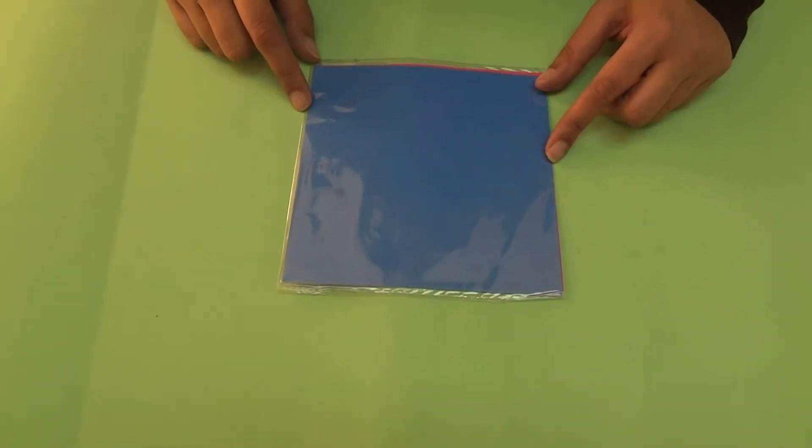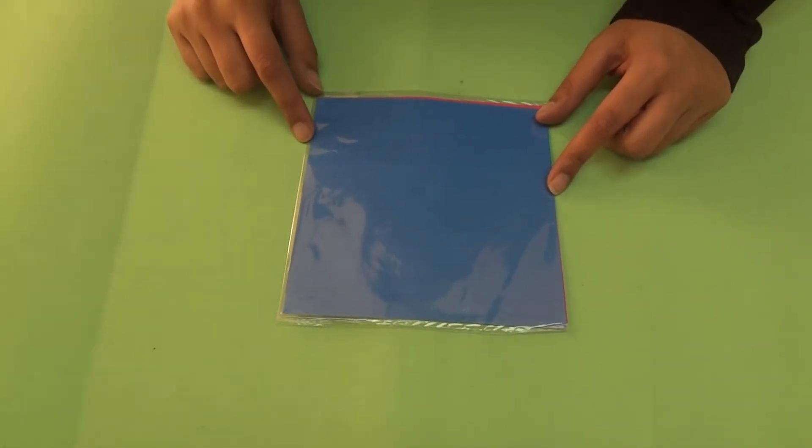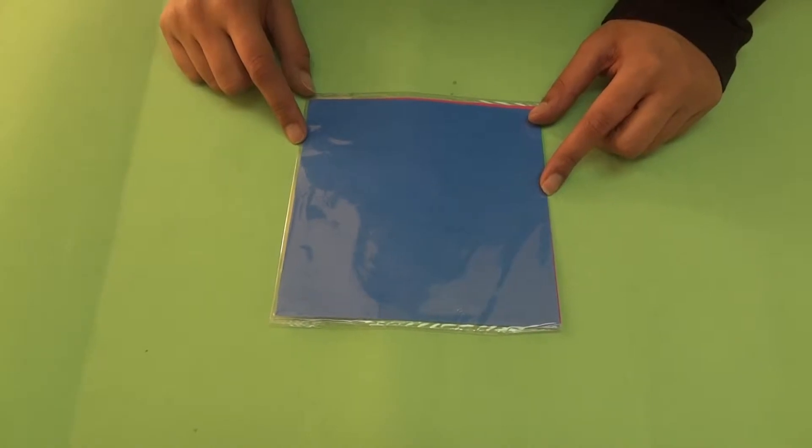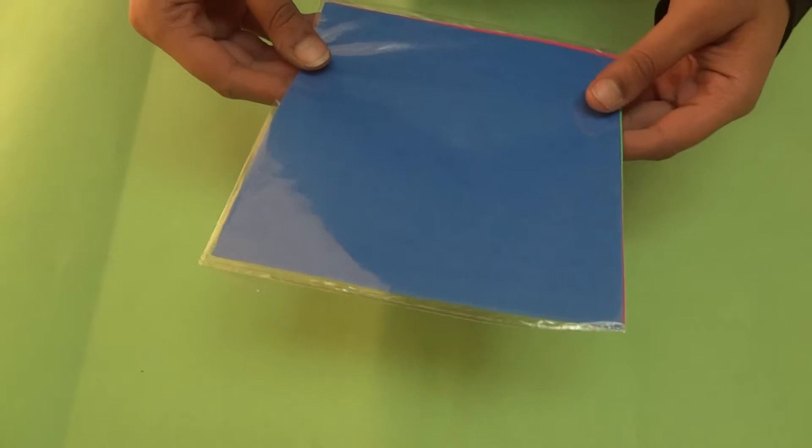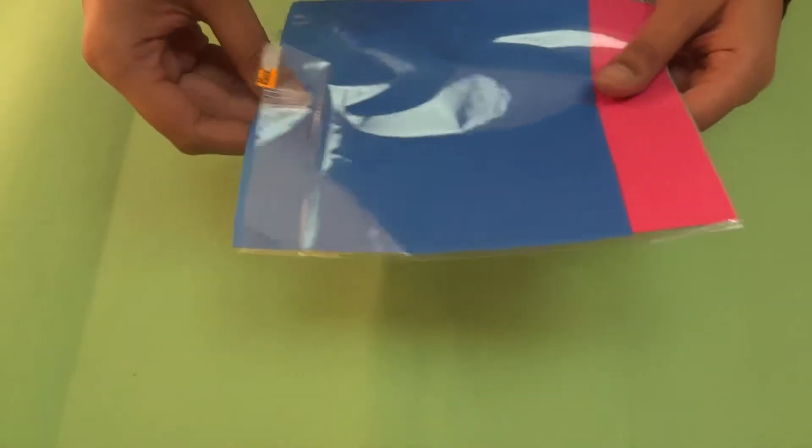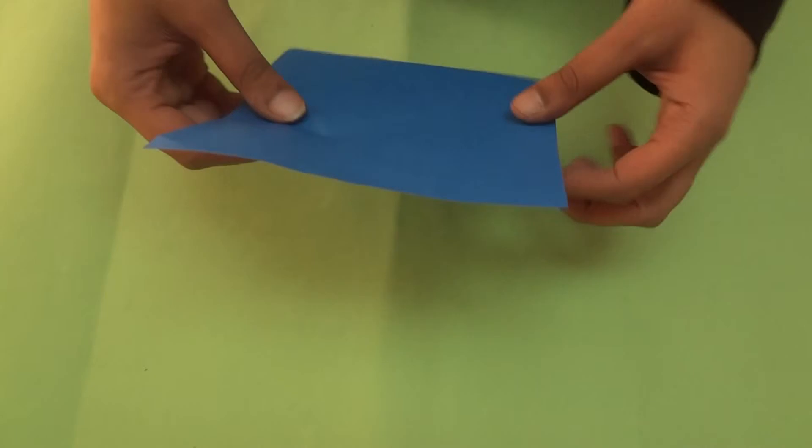Origami is the Japanese art of folding a paper into different shapes and figures. Let us make an origami boat. So you have been given these origami papers. Take one and let's start.